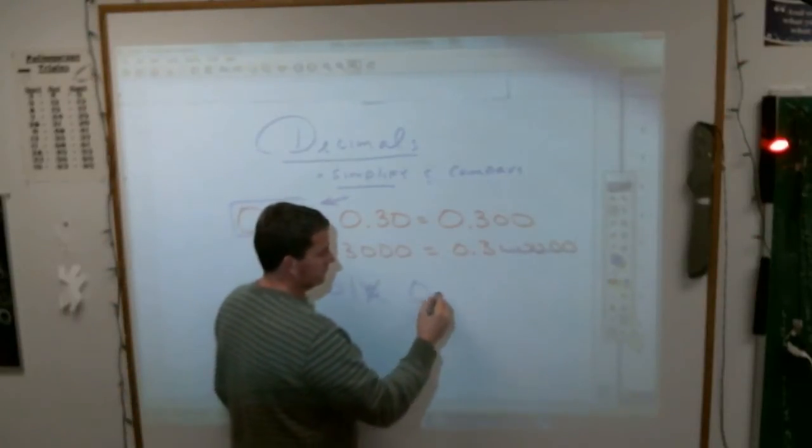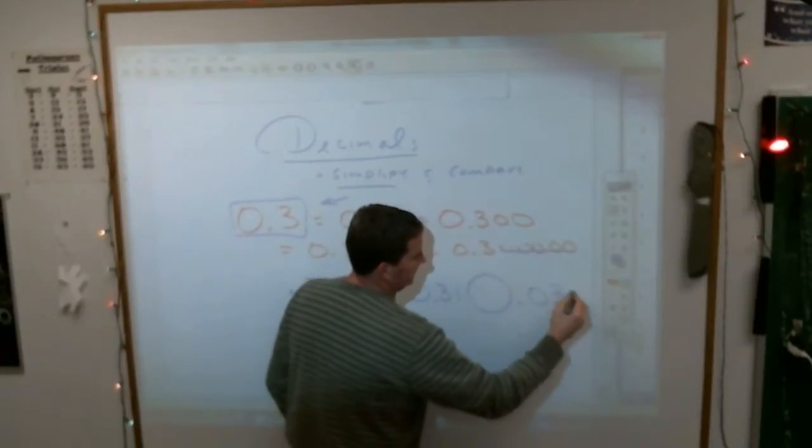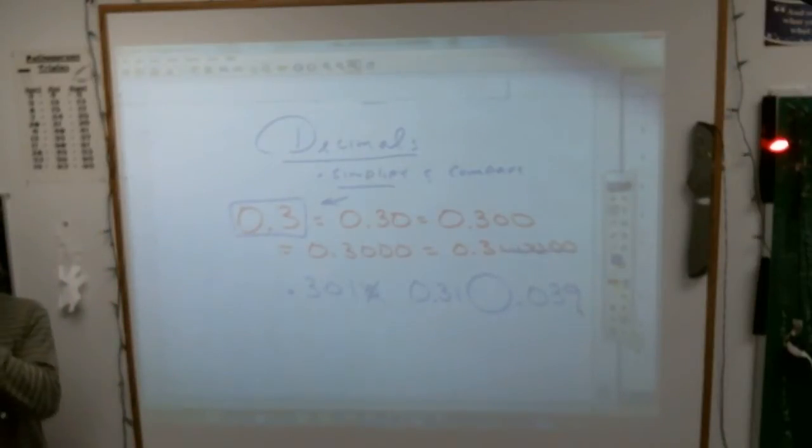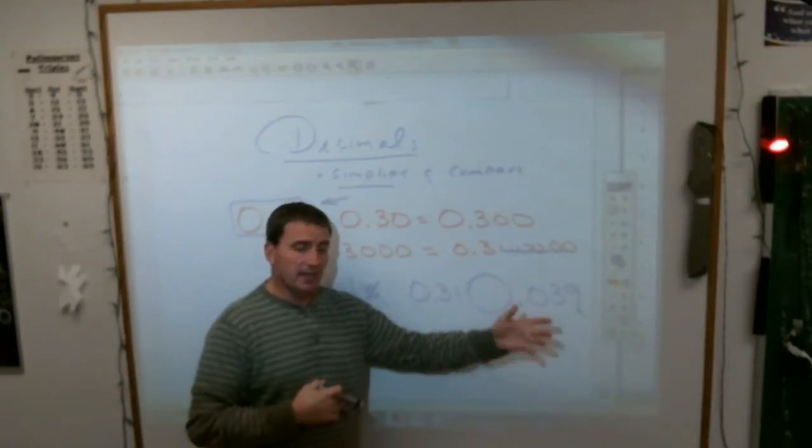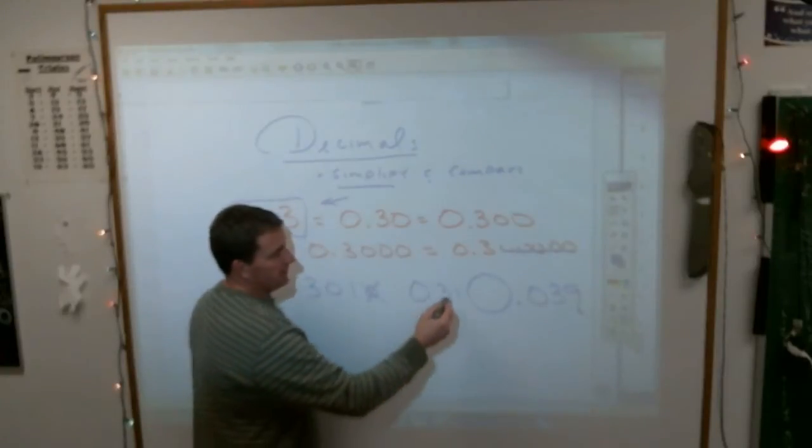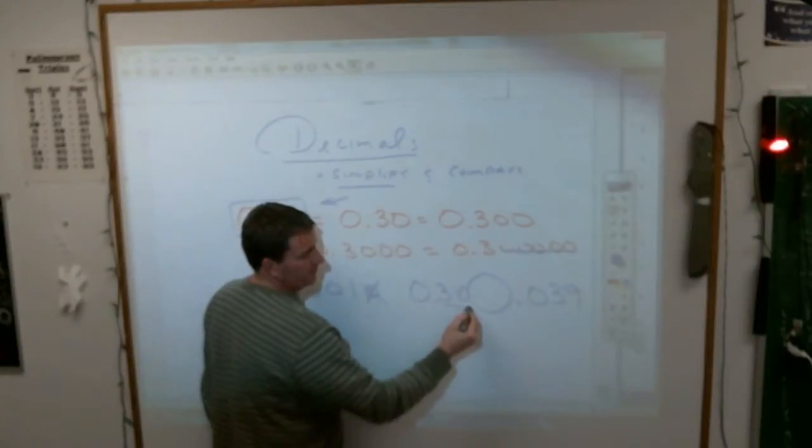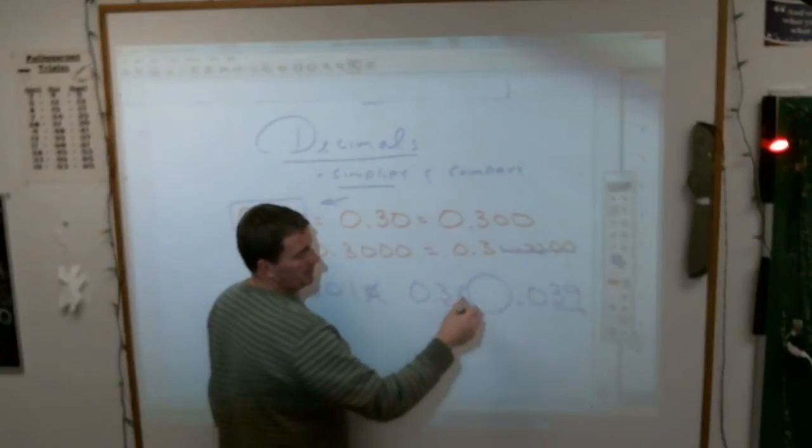0.31 compared to 0.039, which one of those is bigger? 0.31, but isn't this 39? And that's when putting zeros in to take up places would help you understand. Let's say I put a zero here, then it makes it a little bit more clear because this is now after the decimal 310, this after the decimal is 39. The same decimal places are after there. This is bigger.